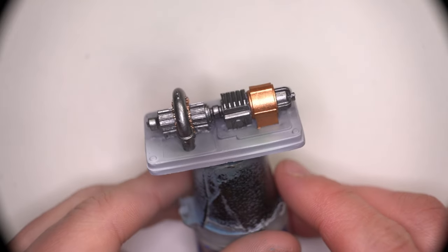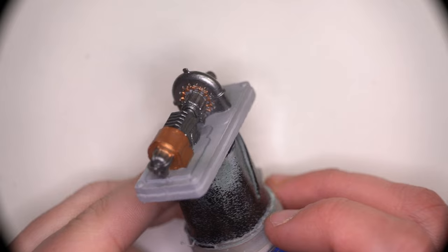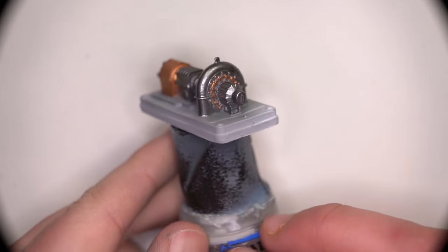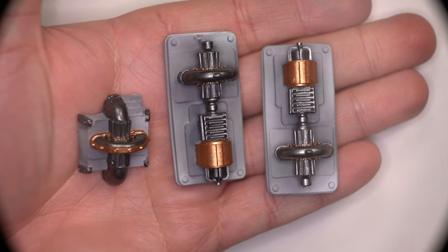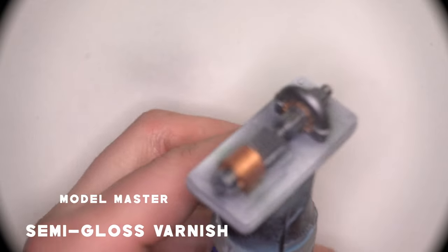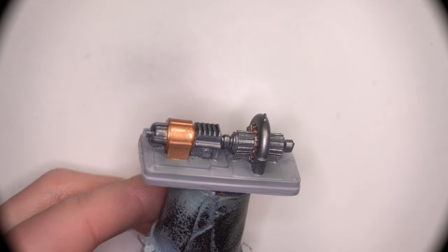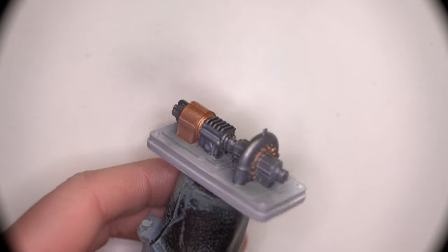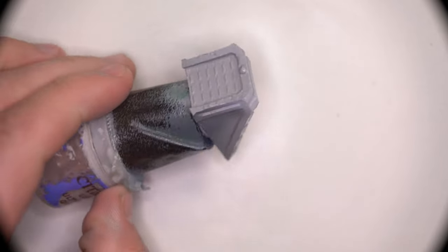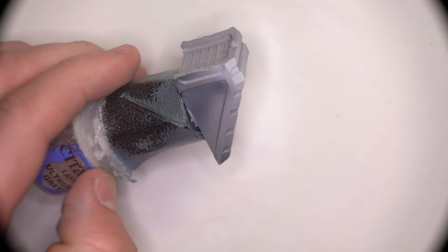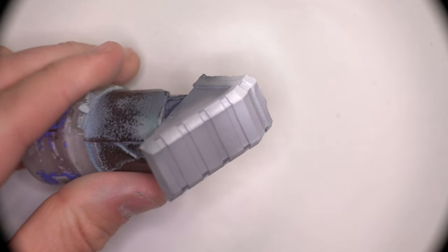As you can see we're already about halfway done with this paint job with only a few colours added. Before we proceed with the brown oil wash we first have to seal the model with some gloss or in this case semi-gloss varnish. This just makes sure that the oil doesn't contaminate the paint that's already applied to the model.